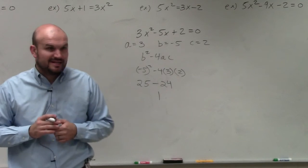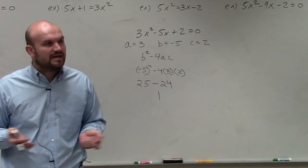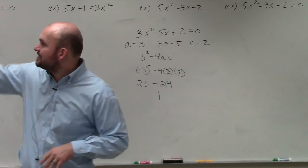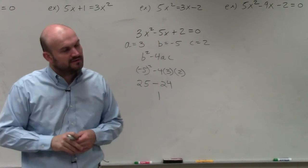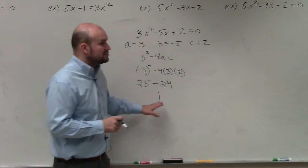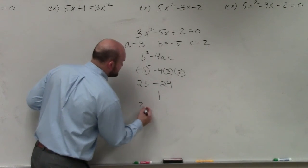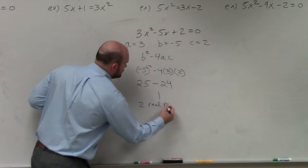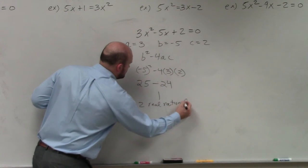Is 1 a square number? Can you take the square root of 1? Yes, you can. Square root of 1 is 1. It's always a square number. Therefore, in this example, I have two real rational zeros.